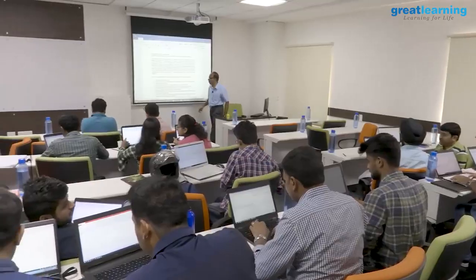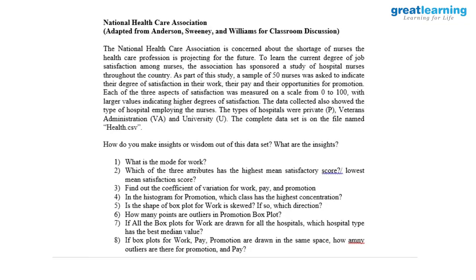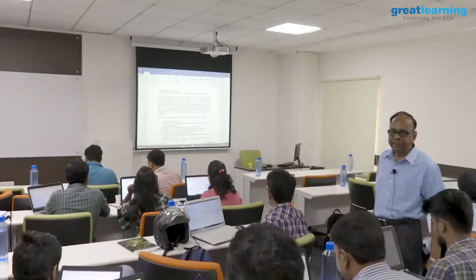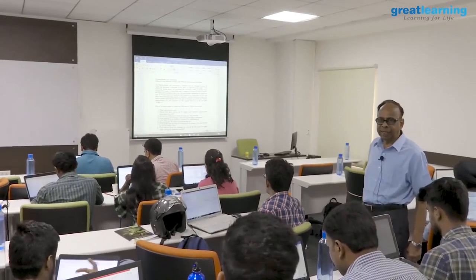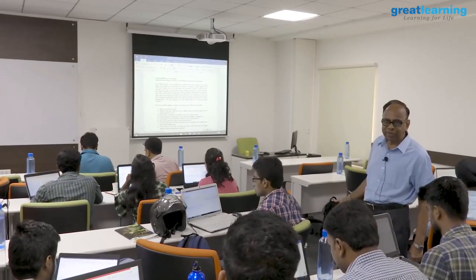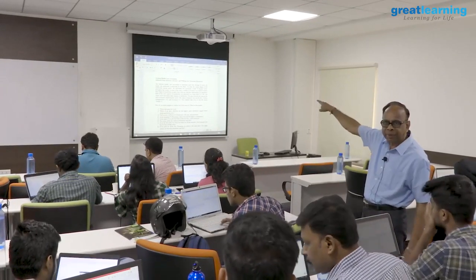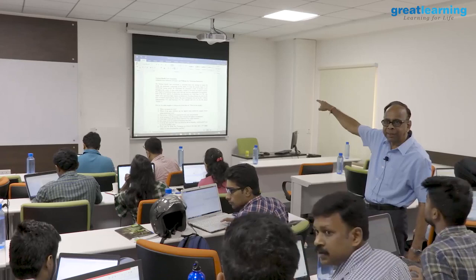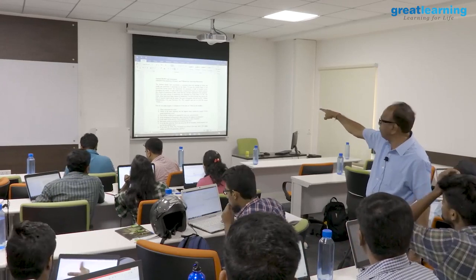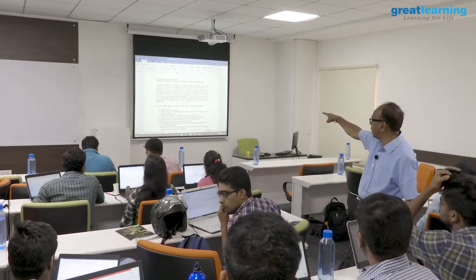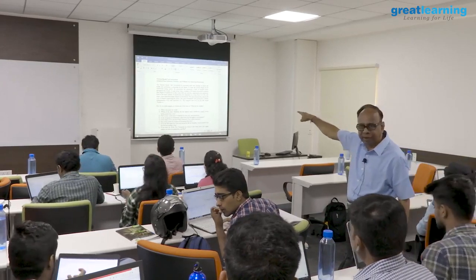Seventh question: if all the box plots for work are drawn for all the hospitals, which hospital type has the best median value? There are three hospital types — private, university, and veteran administration. You can read the file for details.